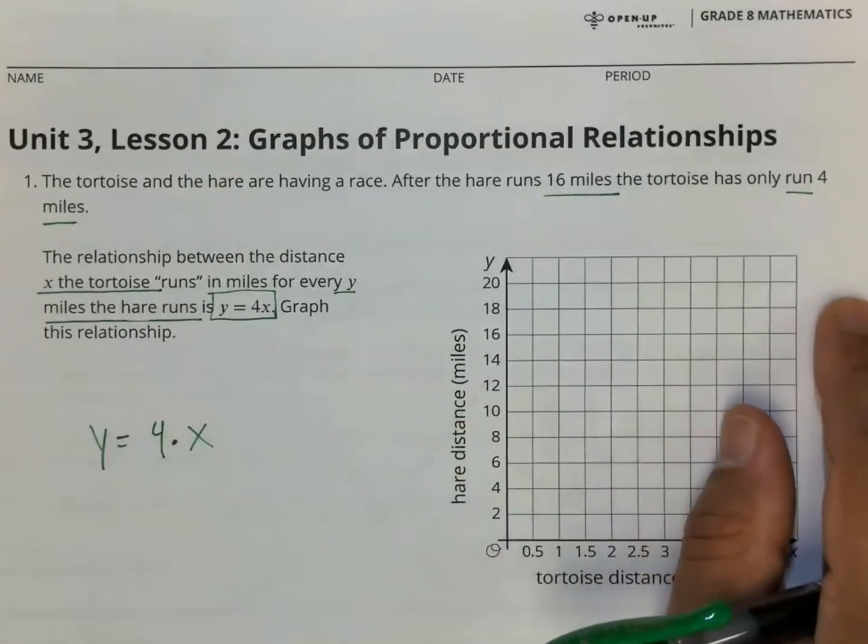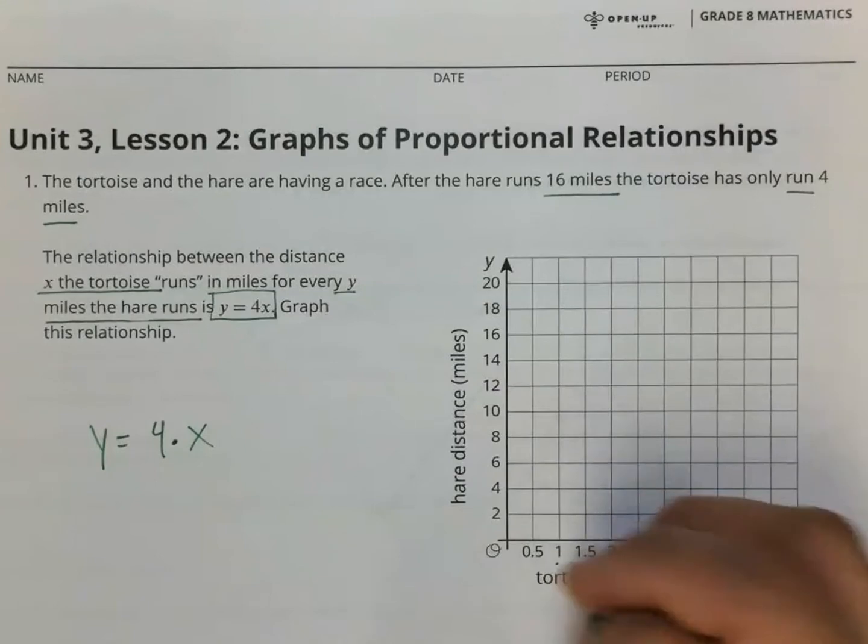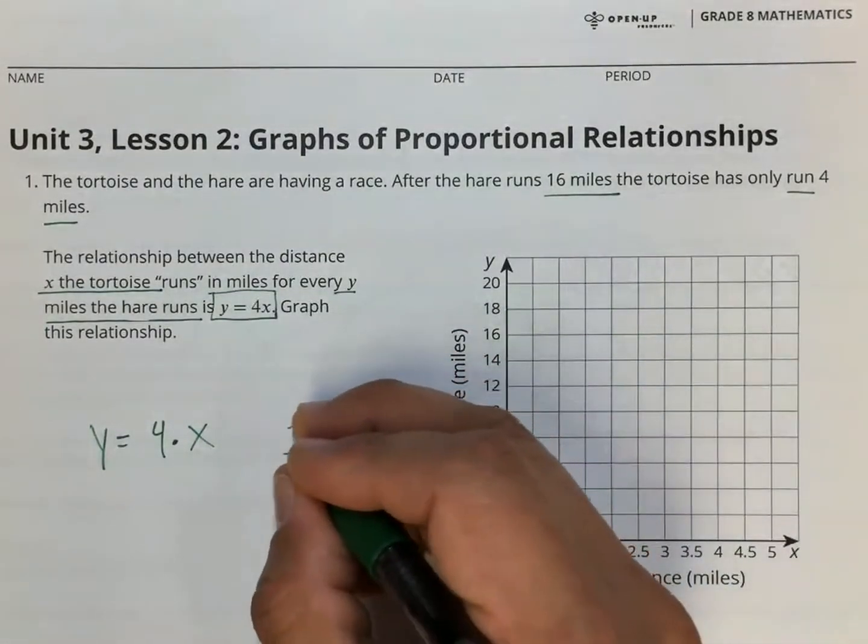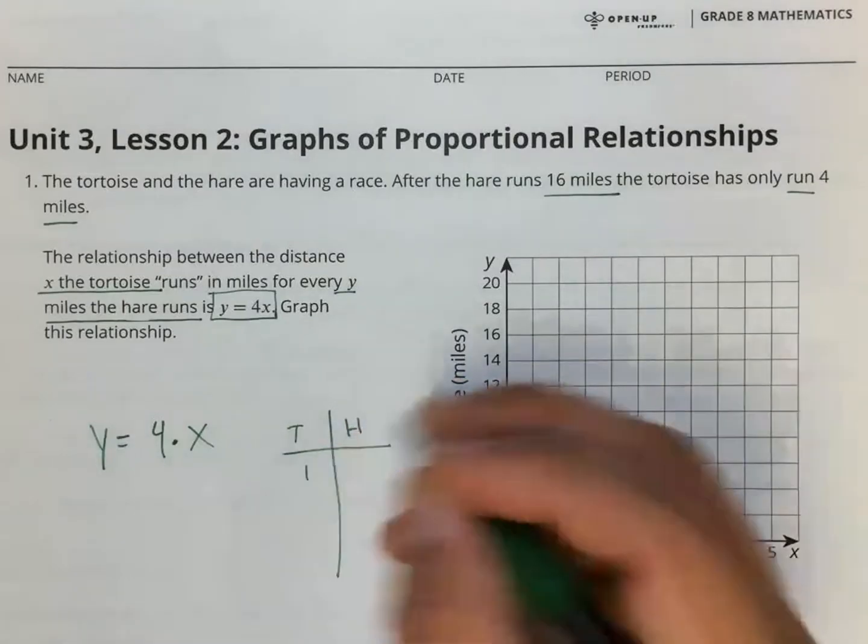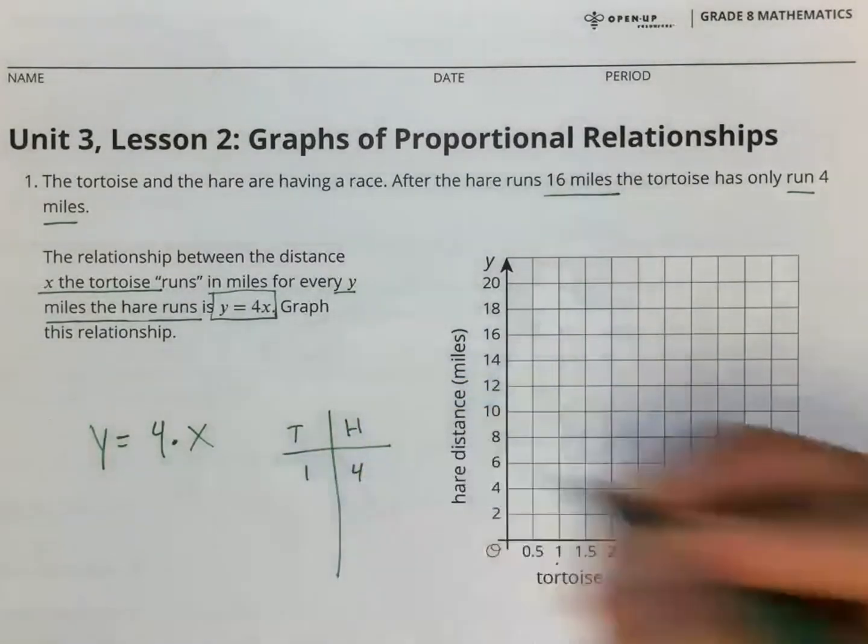So what we can do is do it several ways. One way is if the tortoise runs one mile, then we can make a table, right? Tortoise, hare. If the tortoise runs one mile, the hare will run four miles.